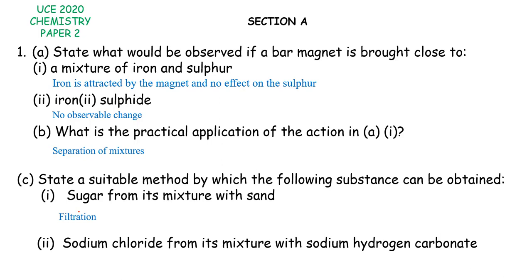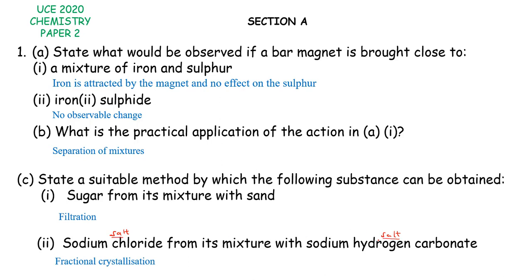Lastly, how can we obtain sodium chloride from its mixture with sodium hydrogen carbonate? Sodium chloride is our table salt, while sodium hydrogen carbonate is a slightly insoluble — or less soluble — salt. So sodium hydrogen carbonate is not as soluble compared to sodium chloride. The question is how can we separate two different soluble salts? In this case, we are going to use what we call fractional crystallization.